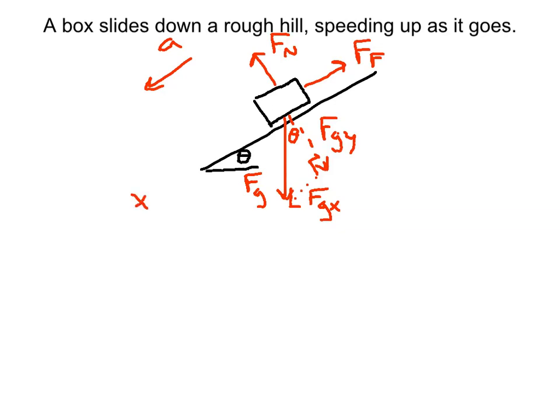So in the X direction, we'll say FGX minus FF equals MA. FGX is going to be FG sine theta minus FF equals MA, and continue from there.